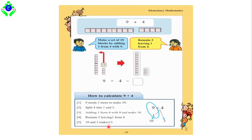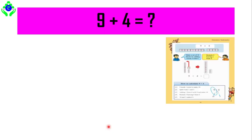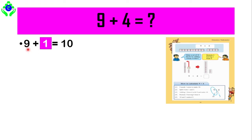Now let's solve this question in a very easy process. The question is: 9 plus 4 equals what? We will maintain these steps. Step 1: 9 needs one more to make 10, so we write 9 plus blank equals 10 — the answer in the blank is 1. Step 2: split 4 into 1 and 3, so we write 4 equals 1 plus 3.